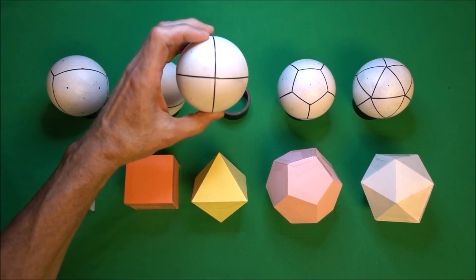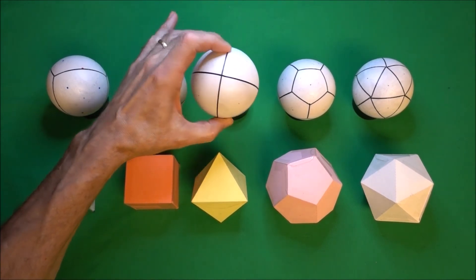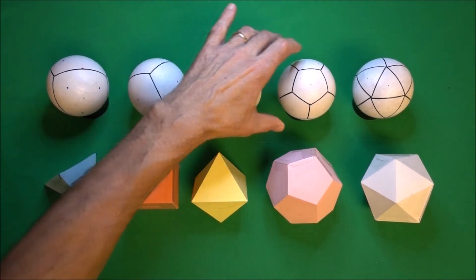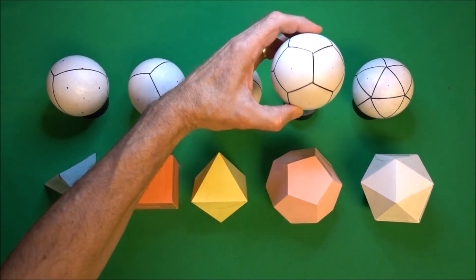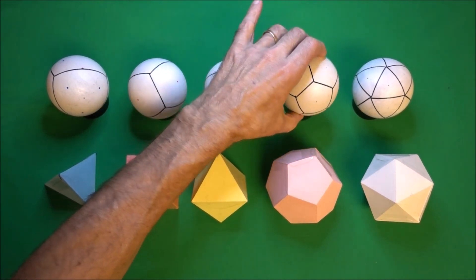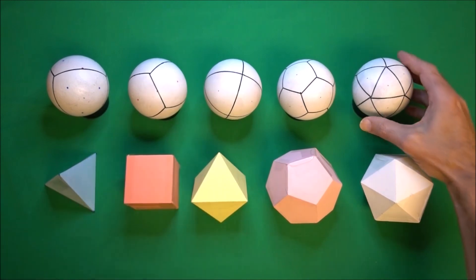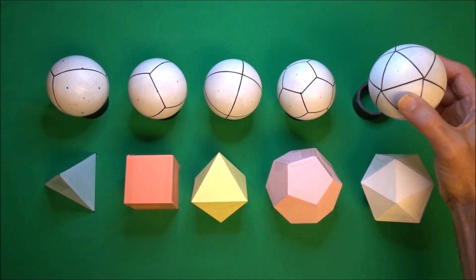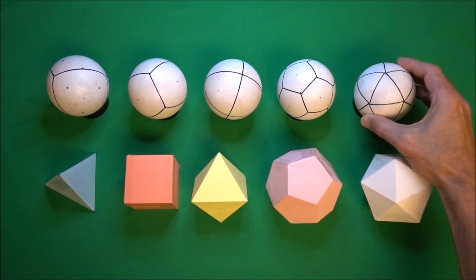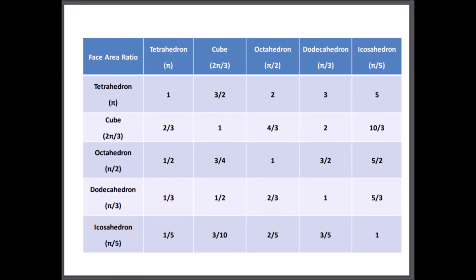In the next video, I'll demonstrate how much easier it is to compare the geometric properties of these platonic solids in the spherical domain, which will also allow a more in-depth analysis. This table illustrates the various ratios of the faces of each of the spherical platonics, and they turn out to all be simple fractions or individual relationships.